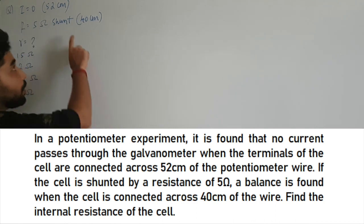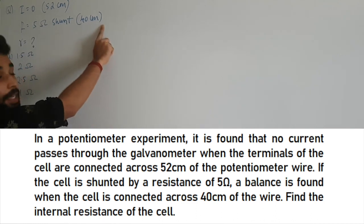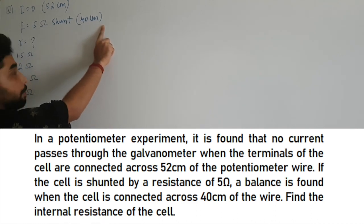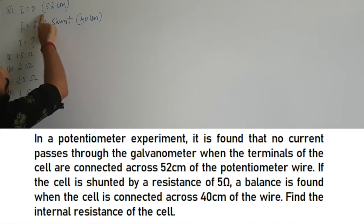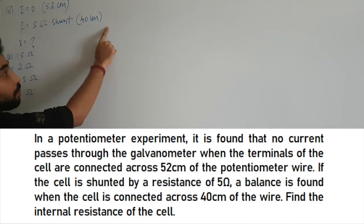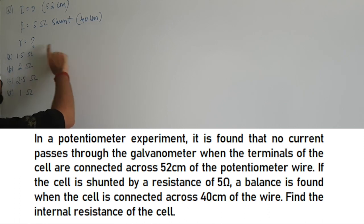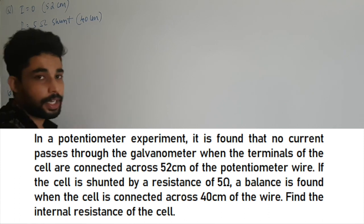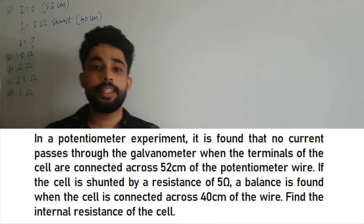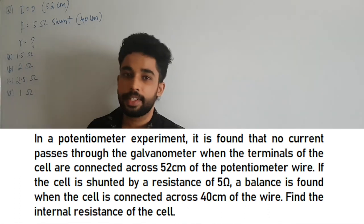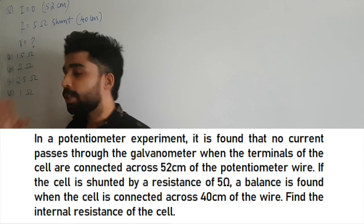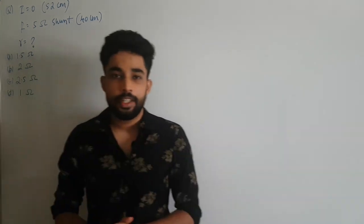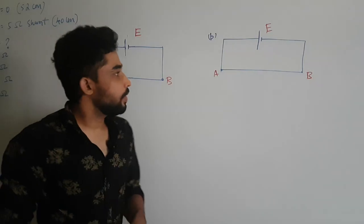At that time the balance point was found to be 40 centimeters. So the balance point changed from 52 to 40 centimeters, and they have asked us to figure out the internal resistance of the cell. Options are given, so let's see how to do it.